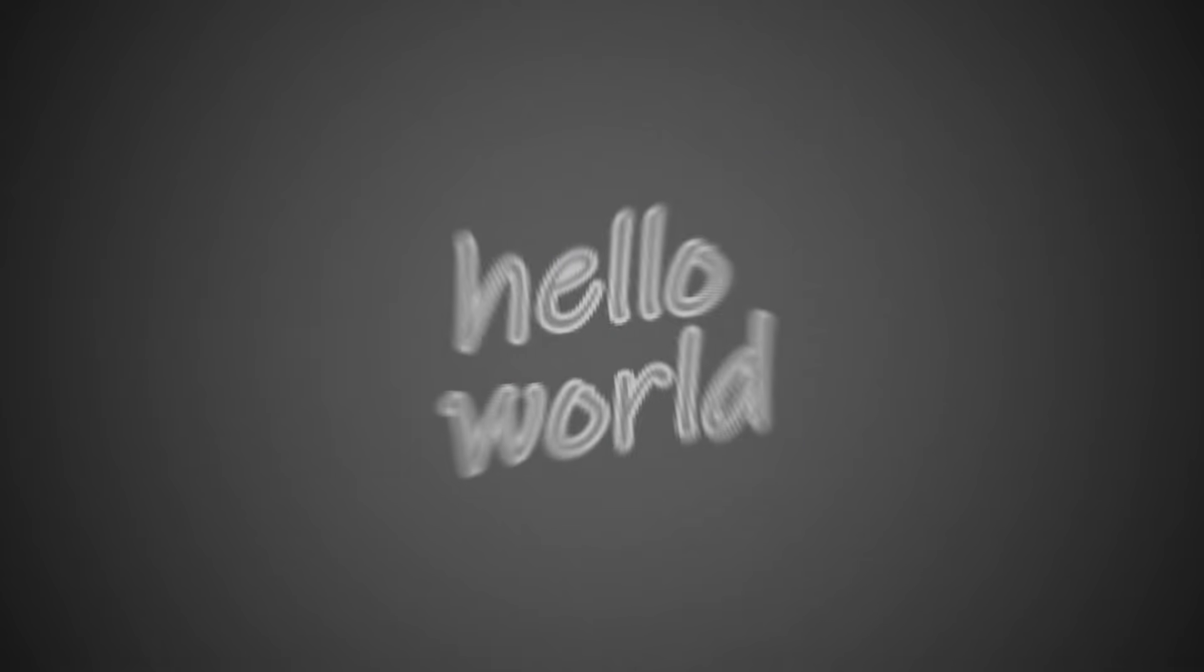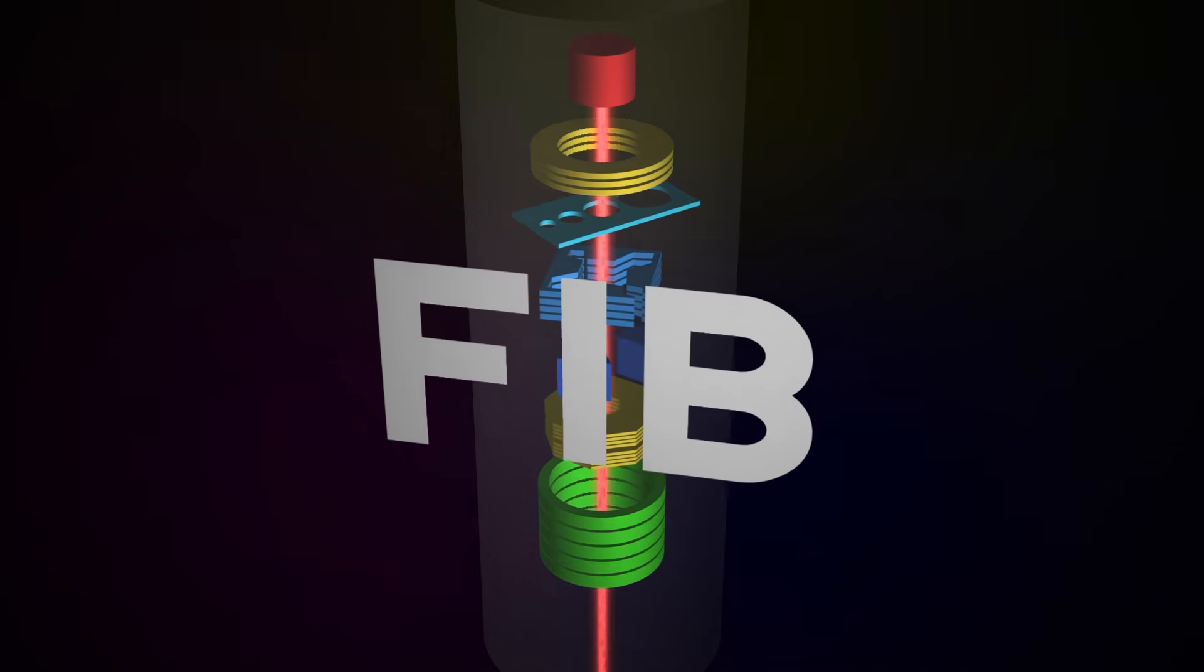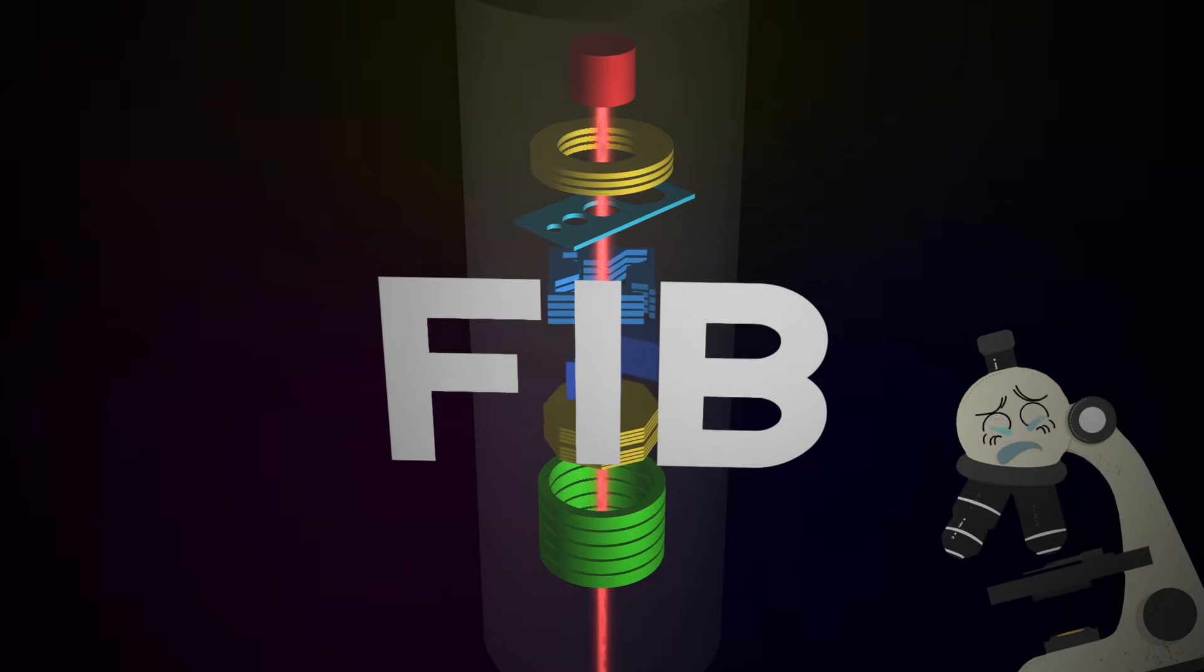Did you know it is possible to write smaller than the human eye can perceive? Universities and industries are using a special type of microscope, the focused ion beam, or FIB, to image and pattern at scales invisible even to an optical microscope.